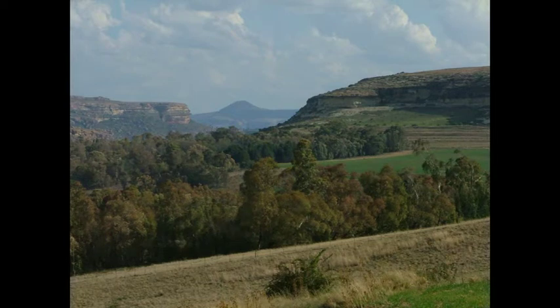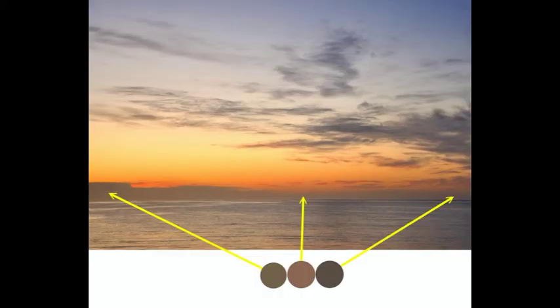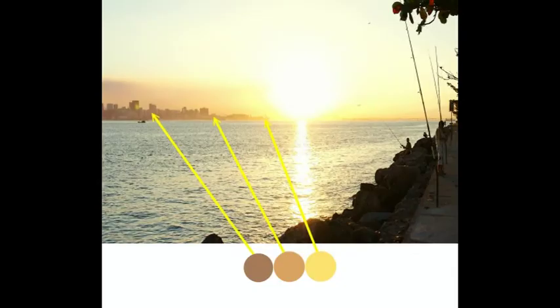Let me show you another photograph and let's see if we can see any blue in the distance. I certainly don't see those background mountains becoming blue, do you? Let's take a look at another one. Here you can see the background mountains are actually becoming more and more yellow — not a touch of blue in sight.